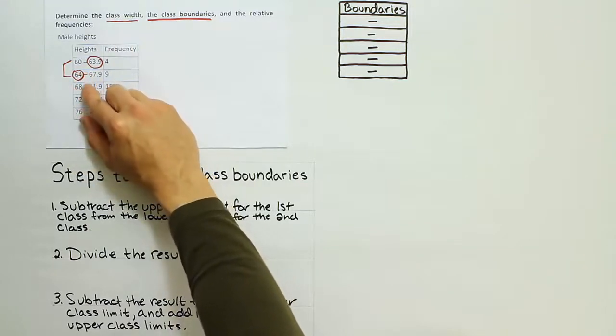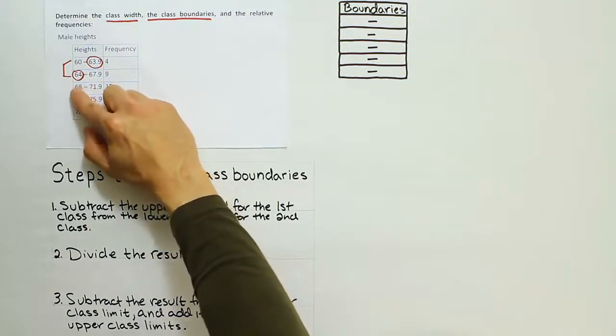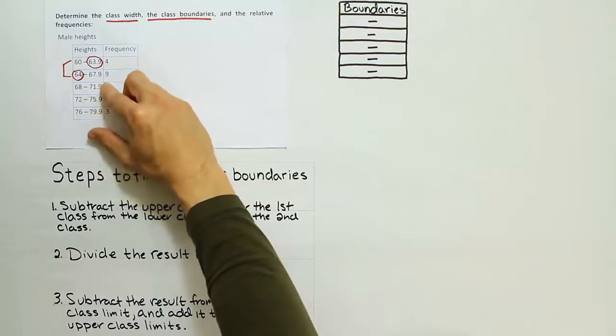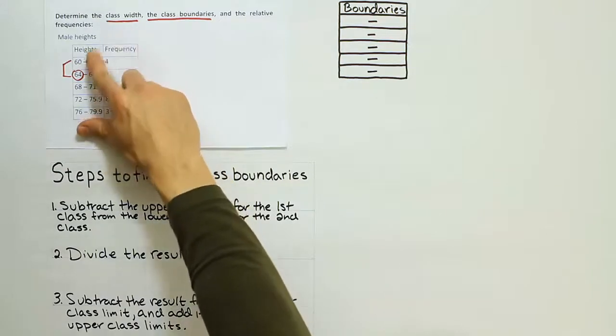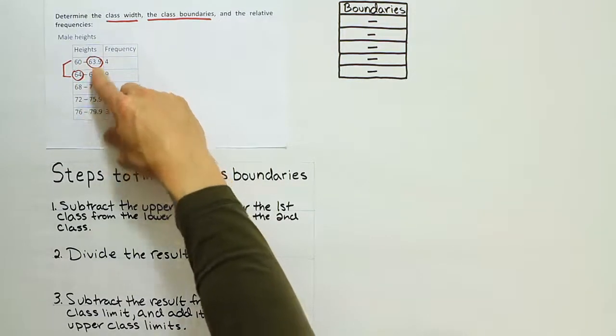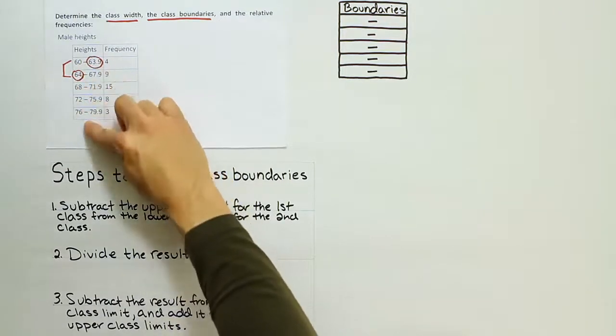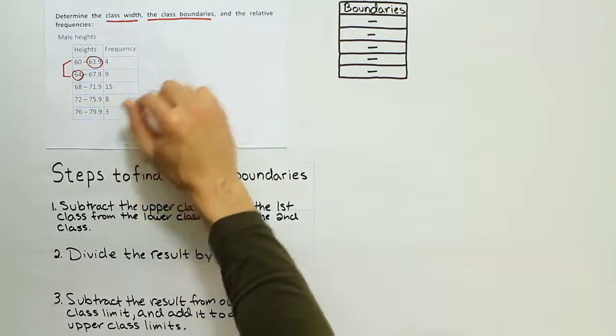You can actually find that by subtracting any two consecutive lower class limits or consecutive upper class limits. As long as they follow one after the other, when you subtract them, you will get 4. Because that's the class width that's been used to create the table. All we're doing is identifying the class width that somebody used to create this table.